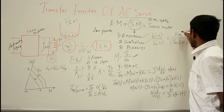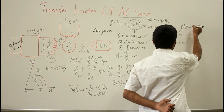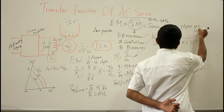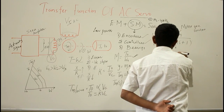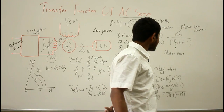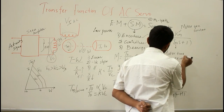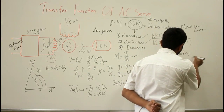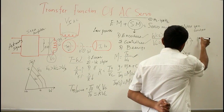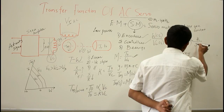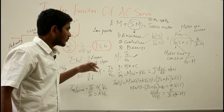In the generalized transfer function Ω(s)/Vc(s) = Km / (τm·s + 1), Km is the motor gain constant given by Km = K / (F₀ − M), and τm is the motor time constant given by τm = J / (F₀ − M). This is the generalized transfer function for the AC servo motor.